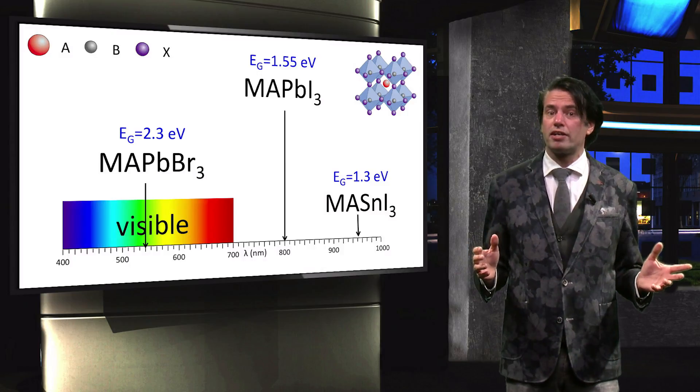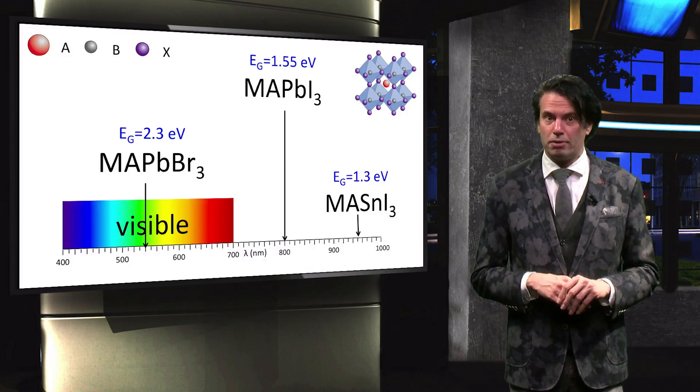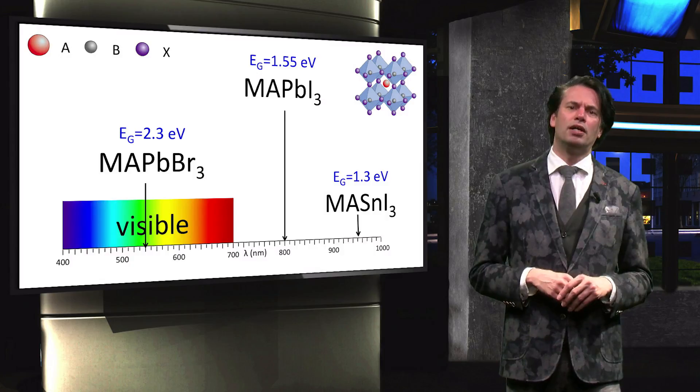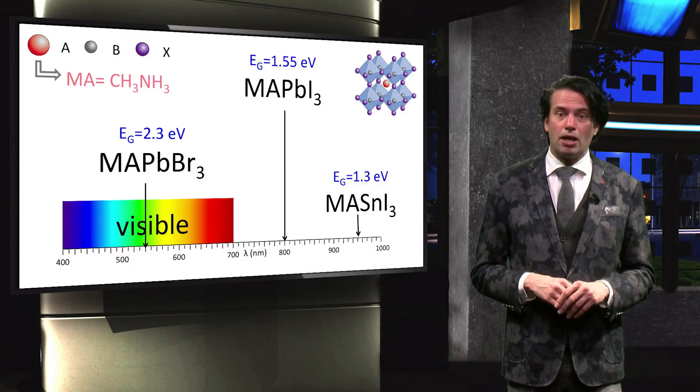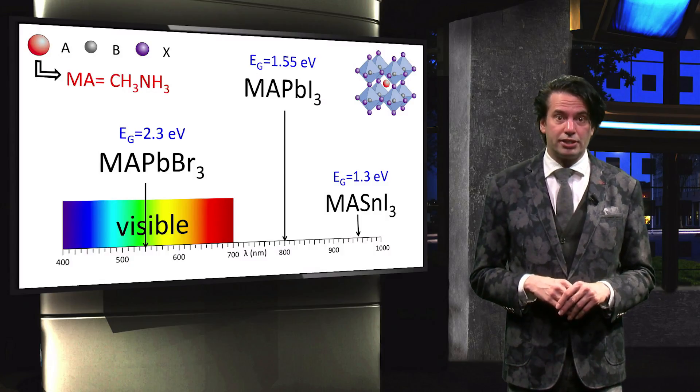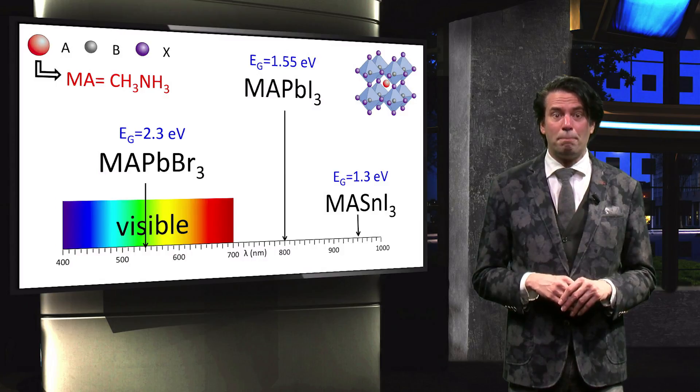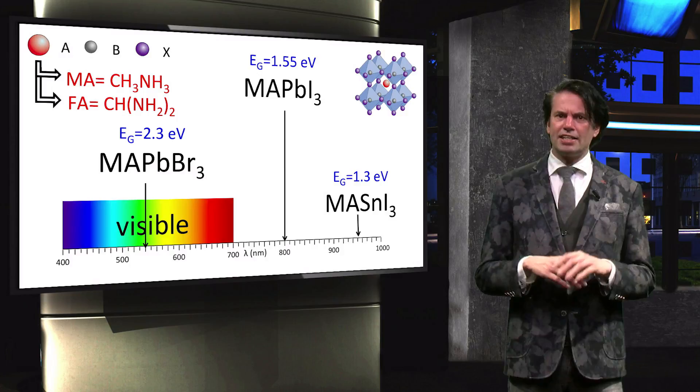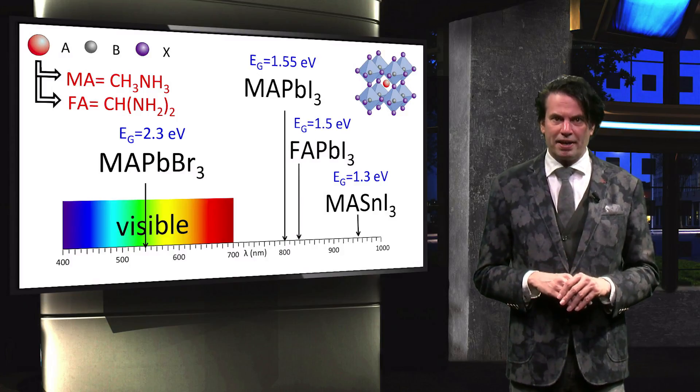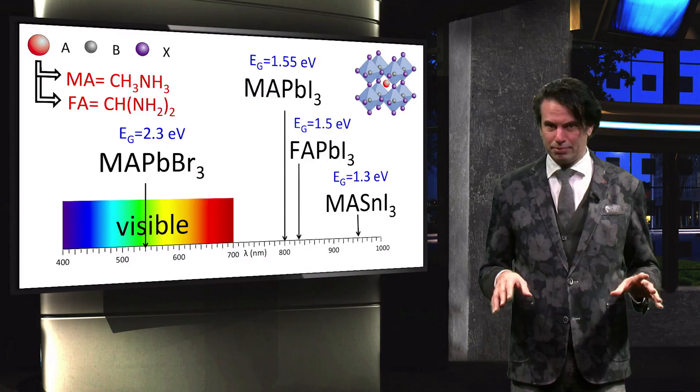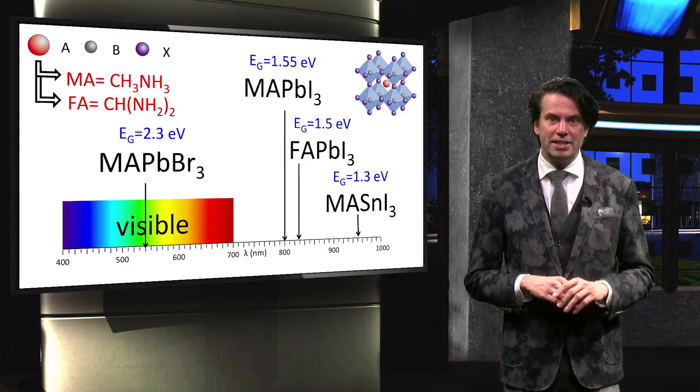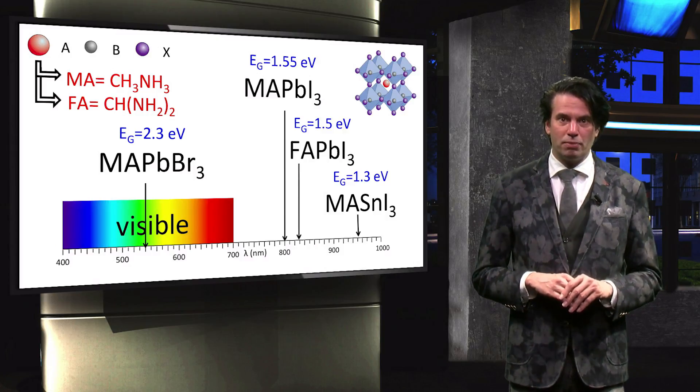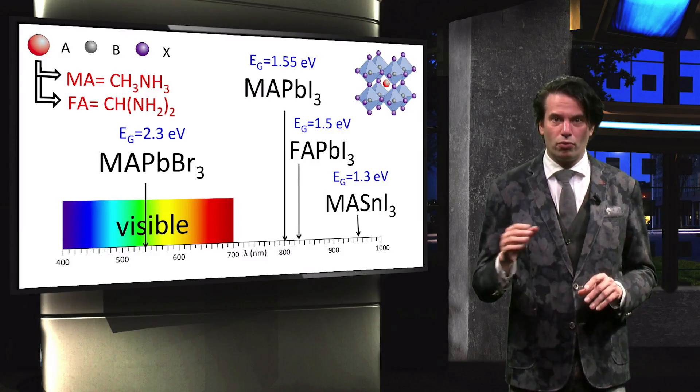The organic cation methyl ammonium CH3NH3 can also be replaced by formamidium CHNH2 too. This has a minor effect on the bandgap in reference to methyl ammonium lead iodide. The bandgap of formamidium methyl ammonium lead iodide has a small red shift.